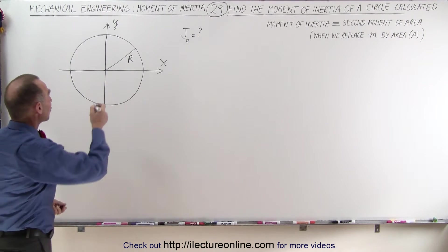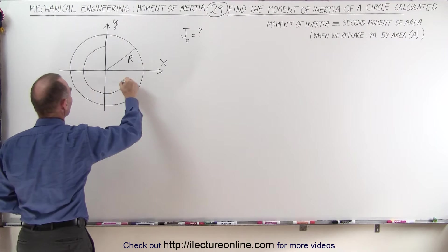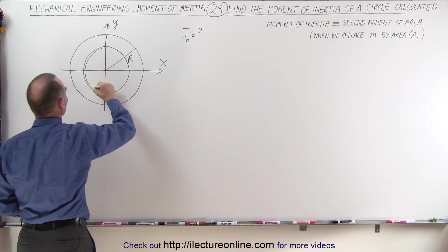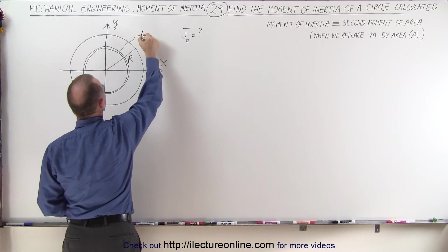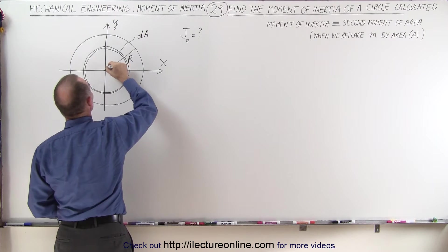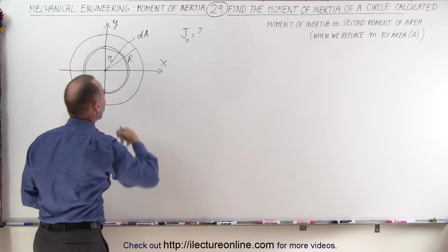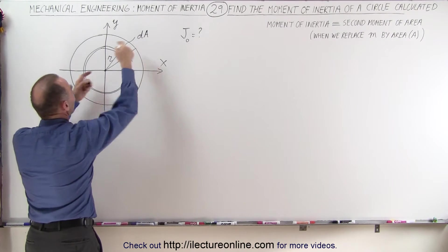Now, we can do that by drawing a small area element. So let's go ahead and draw a very small little area element, a very small thickness. And we'll call that a DA. And the DA is at a distance r away from the center of the circle. So we use a small r as the variable r. The big r is simply the radius of the circle.